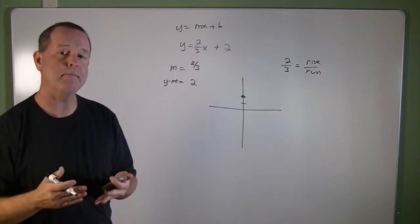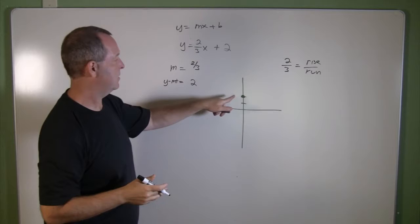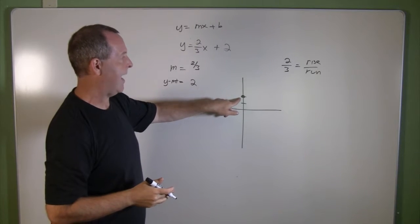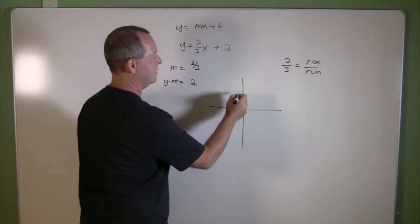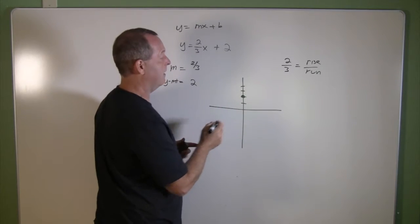It tells me from one point to the next how to get there. So from this point, I go up two, I have a rise of two, and then I have a run of three.